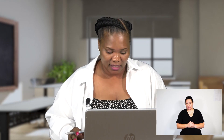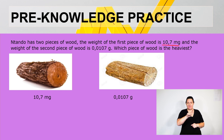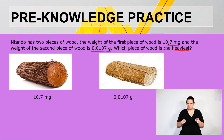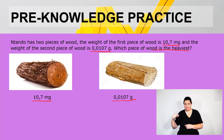Here is another question. Ntando has two pieces of wood. The weight of the first piece is 10.7 milligrams and the weight of the second piece is 0.0107 grams. Which wood is the heaviest? You have a choice of converting either from milligrams to grams or from grams to milligrams. For this lesson, I will convert from grams to milligrams, and you can work out what the answer would be if you convert from milligrams to grams.